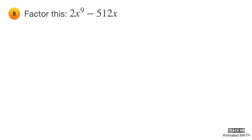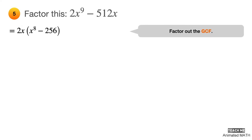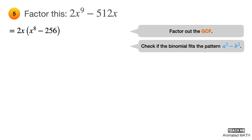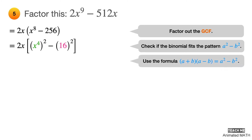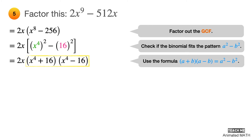If you loved the chain factoring from problems 3 and 4, you'll enjoy number 5 even more! Factor the GCF of the binomial, which is 2x. Check if it fits the pattern a² − b²: x⁸ is the square of x⁴, and 256 is 16 squared. Factor using (a + b)(a − b) where a equals x⁴ and b equals 16.